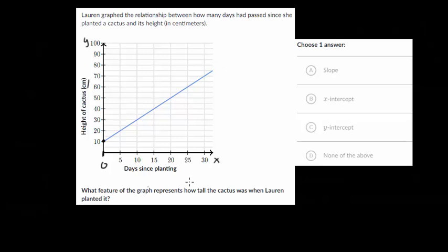So which feature of the graph represents how tall the cactus was when Lauren planted it. So when she planted it, that means that days since planting would equal zero. So we are looking at this point right here. So at day zero, we go up and find our blue line. And it looks to be a height of 10 centimeters. But again, we're not looking for the exact amount of the height. We're looking for the feature of the graph.